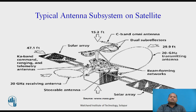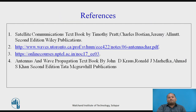Looking at a typical antenna subsystem on a satellite, you can see a receiving antenna operating at 30 GHz mounted on the satellite, a steerable antenna with the property of steering in all directions, and solar arrays as part of the power subsystem. In satellite link design, the uplink frequency is always greater than the downlink frequency.